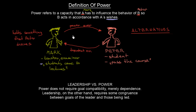Now let's think about a similar concept: leadership. When we compare leadership and power, we see that power does not require goal compatibility — it merely requires dependence. Dependence is the cornerstone of power, as we saw in our example where Peter is dependent on Mark. Leadership, on the other hand, requires some congruence between the goals of the leader and those being led.